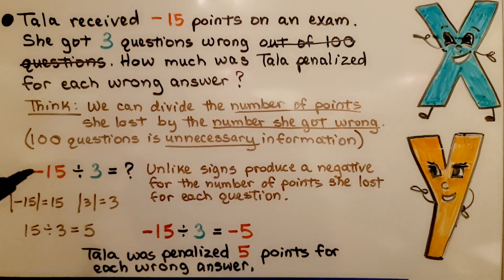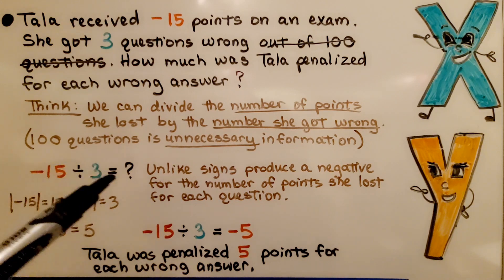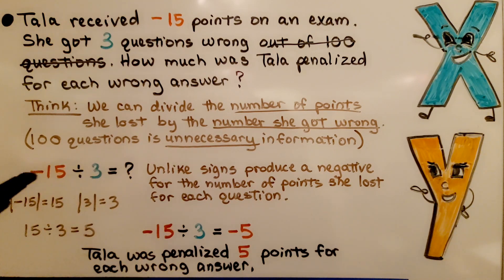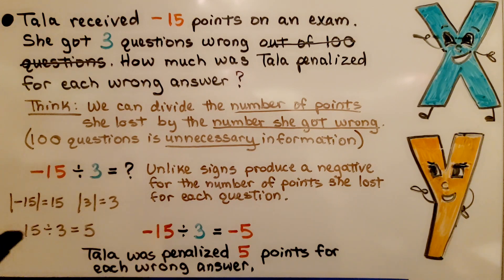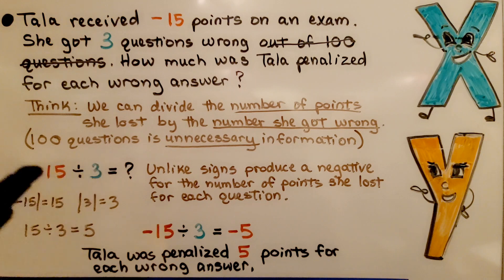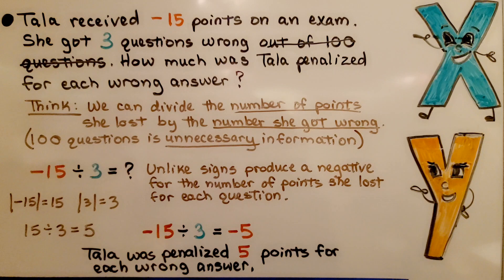We have negative 15 divided by 3 is equal to some number. We can write a related multiplication sentence or we can use absolute values. For absolute values, the absolute value of negative 15 is 15 and the absolute value of 3 is 3 and 15 divided by 3 is 5. We see they have unlike signs that will produce a negative. That means we have a negative 5. That means Tala was penalized 5 points for each wrong answer.